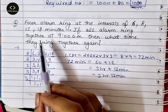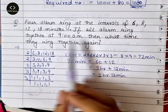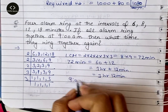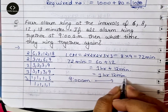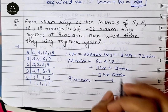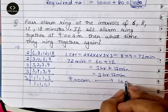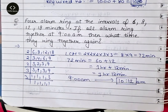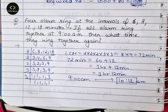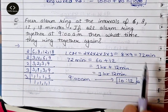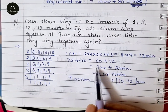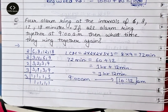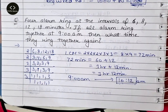उसने बोला था if all alarms ring together at 9 AM. सारे alarm 9 AM पे एक साथ ring किये थे। अब 1 hour 12 minutes के बाद — means 10:12 पर दुबारा ring करेंगे। 10:12 AM पर दुबारा एक साथ सारे alarm ring करेंगे। LCM लिया, minutes को hours में change किया, answer: 10:12 AM।